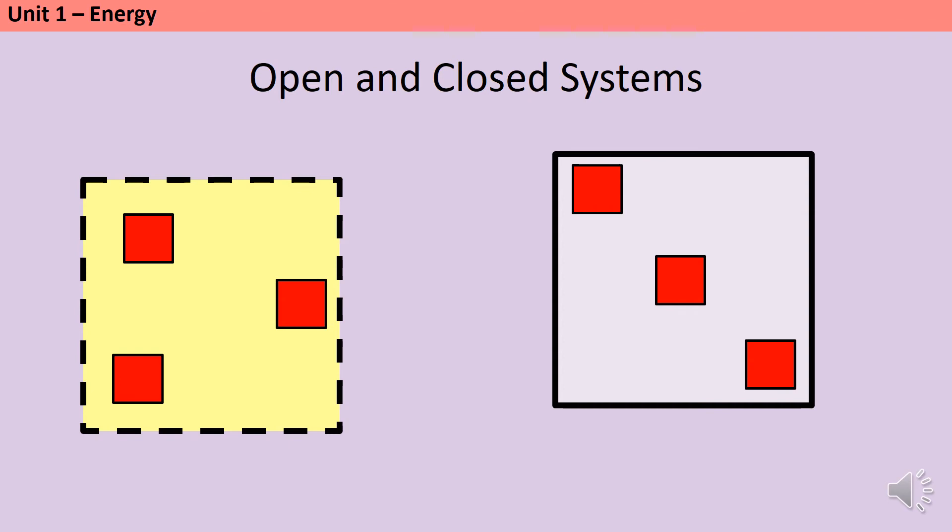A system is a group of objects that we're choosing to analyze together. It could be as simple as a cardboard box and the objects inside of it, or as complex as a whole planet. Now, I've got two systems here. On the left is an open system, and on the right is a closed system.